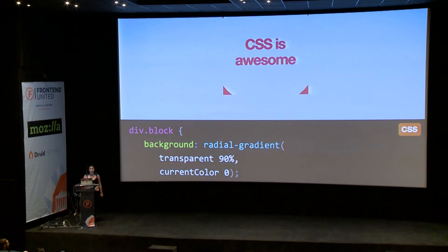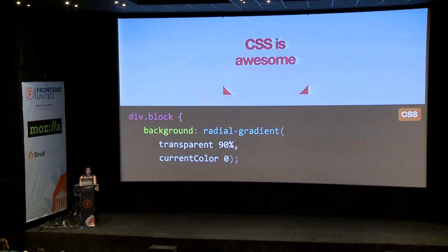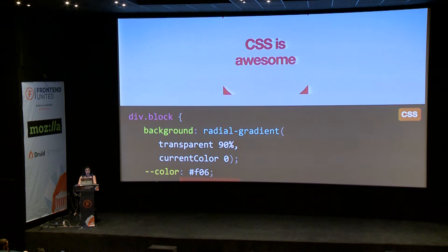currentColor came from SVG and it made its way into normal CSS. CSS variables are kind of like the extreme generalization of this concept. They allow us to define any custom property we want, as long as it starts with dash-dash. So let's define a color property and give it a value of pink. You call these custom properties with the var function, and you can use that in any property value. As you can see, this works exactly the same way.